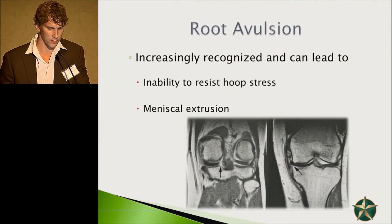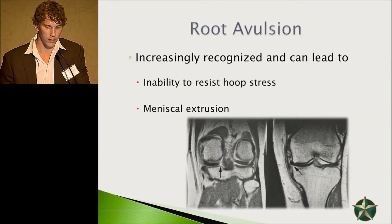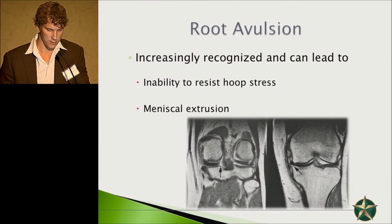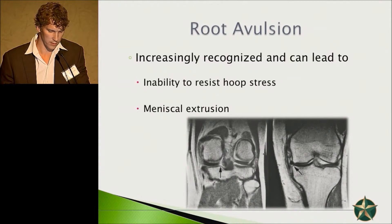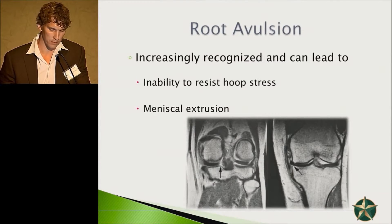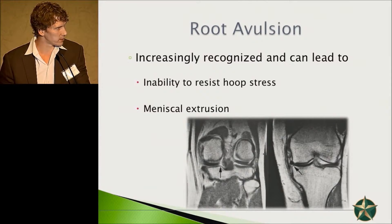A root avulsion, increasingly recognized by scrutinizing the MRI, can lead to inability to resist hoop stresses and cause meniscal extrusion, which you can see in the picture on the right and the MRI cut on the left. You'll see the radial split on the coronal cut of the MRI, which is classic and you definitely have to look for it. Sometimes you'll miss it on the axial plane due to the MRI cut.